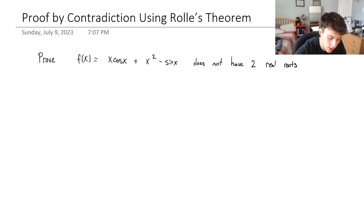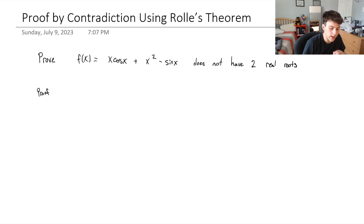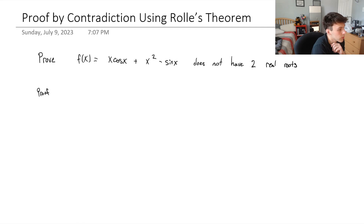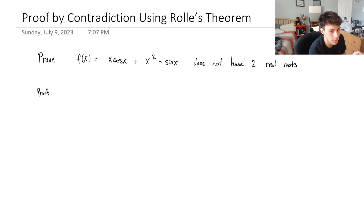To start off this proof, if we're asked to prove by contradiction, and it's saying prove that this does not have two real roots, then we would assume that there are two real roots, and then hopefully we would reach some sort of contradiction that says that's not possible.